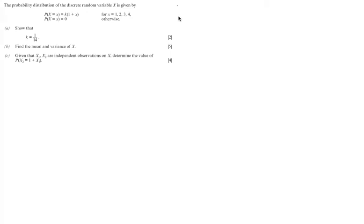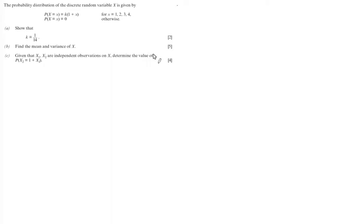The probability distribution of the discrete random variable X is given by P(X=x) = kx(1+x) for x from 1 to 4, and 0 otherwise. We want to show that k is equal to 1/14.